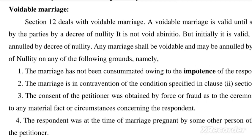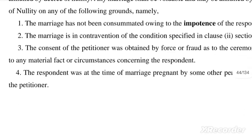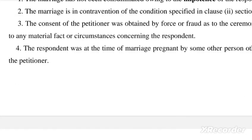The grounds for voidable marriage are: first, the marriage has not been consummated owing to the impotence of the respondent; second, the marriage is in contravention of the condition specified in clause 2 of section 5; third, the consent of the petitioner was obtained by force or fraud as to the ceremony or as to any material fact or circumstances concerning the respondent; and fourth, the respondent was at the time of marriage pregnant by some person other than the petitioner.